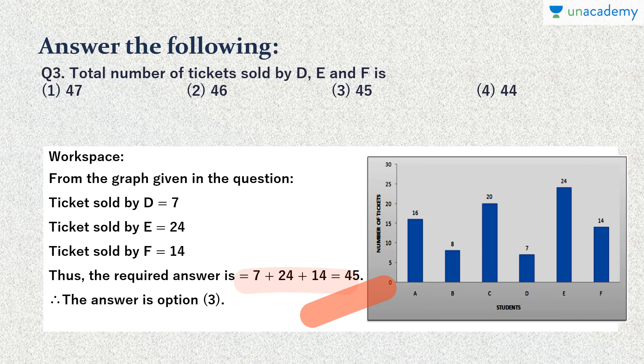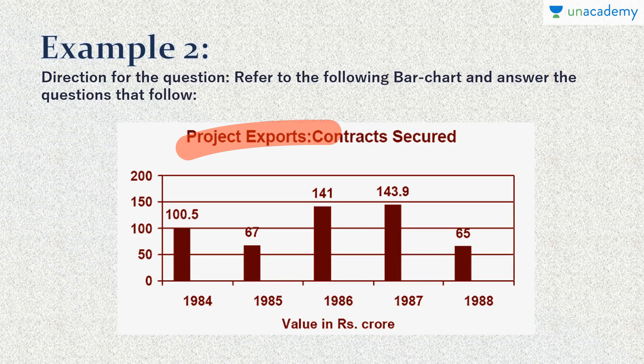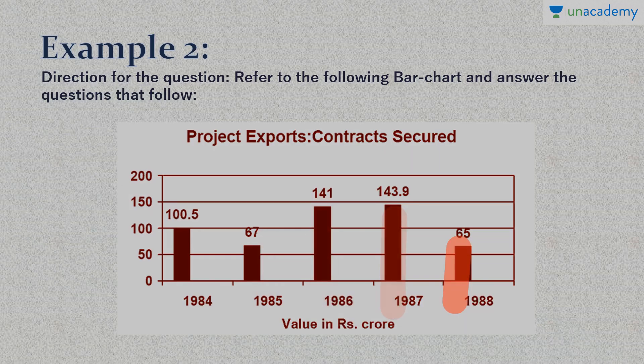Now we'll move on to one more example quickly. Example 2: Directions for the question - refer to the following bar chart and answer the question. The bar chart represents Project Exports Contracts Secured. The value is in crore and it is for some company where these are the number of project exports for which the contracts have been secured. These are the years in which the different contracts were secured. These values are in crores. I will proceed with the question.